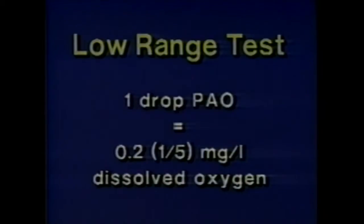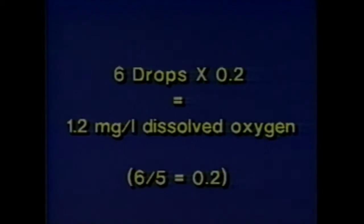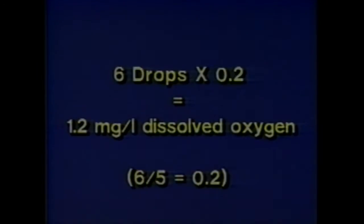Recall that 0.2 is equal to one fifth. So if, for example, six drops were added in the low range test, the dissolved oxygen would be six multiplied by 0.2, which equals 1.2 milligrams per liter dissolved oxygen. Note that the same result is obtained if six is divided by five.